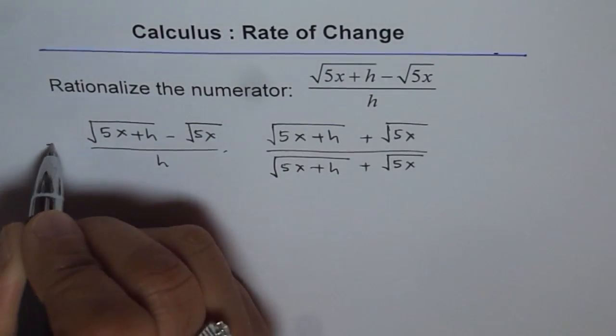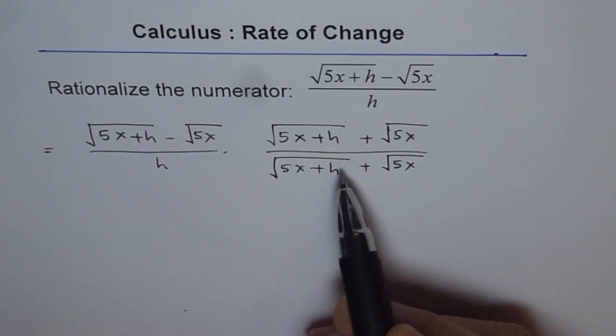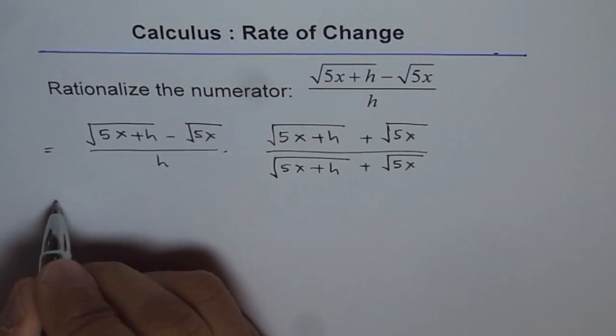Now, so we started with this expression, which is equal to this times this, since this is just 1. So 1 times anything is the same thing.